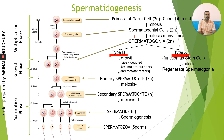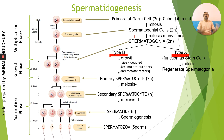In males, puberty starts at around 11 to 12 years, but the reproductive phase may continue for a very long period of time. Beyond a certain age — maybe 50, 55, or 60 years — the number and quality of sperm cells may decrease, but production does continue at a very low rate. Therefore, males produce millions and millions of sperms in their lifetime, and there must be enough spermatogonia in the testis. The stem cells undergo continuous mitosis to keep regenerating the spermatogonia.